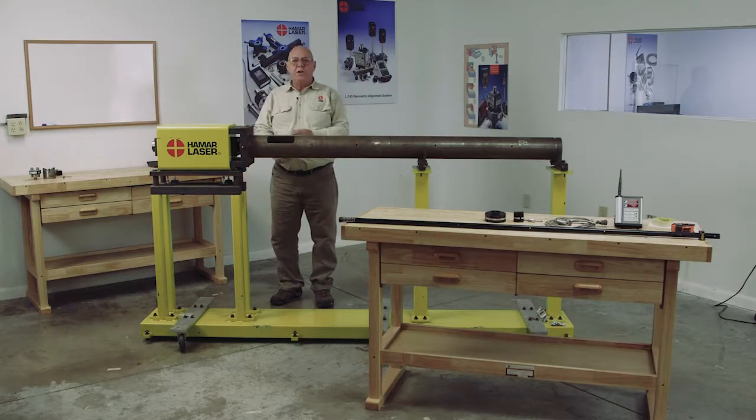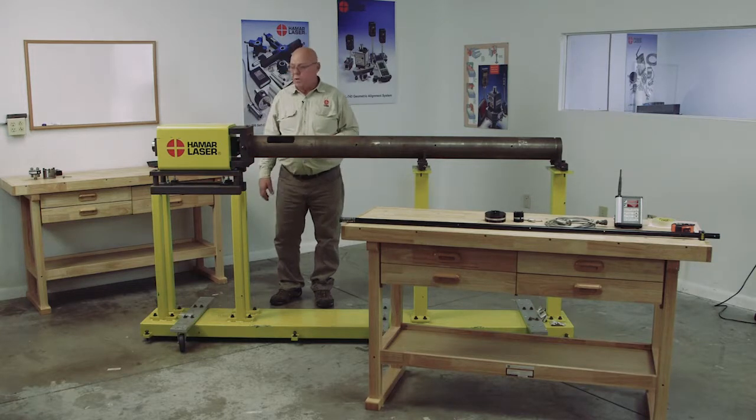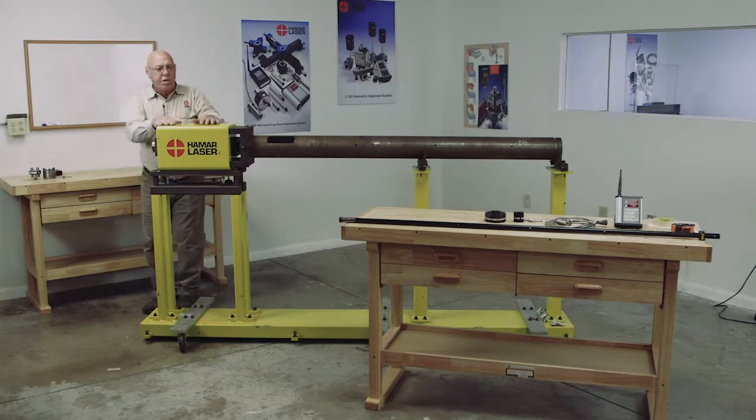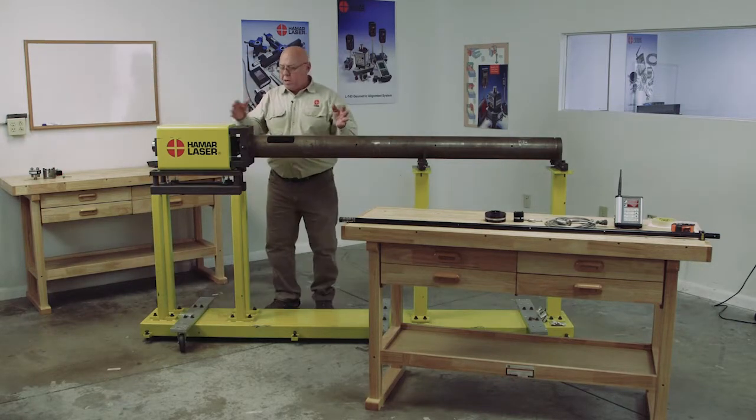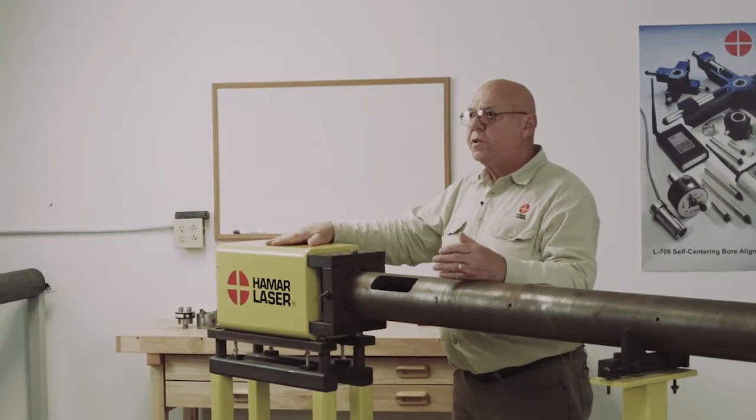I'm Darrell Ford, and in this video I'm going to show you how to set up and check the alignment of an extruder barrel. The purpose is to align the barrel to the gearbox. In other words, this barrel mounts on here, and we want to ensure that it's in line with the axis of rotation of this gearbox.